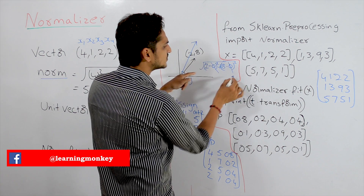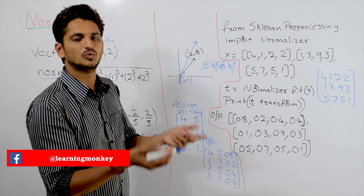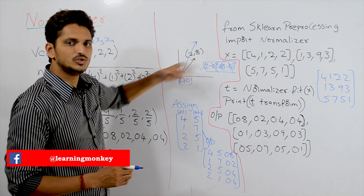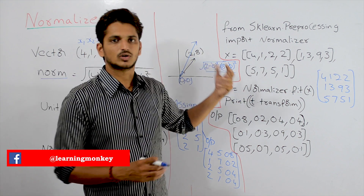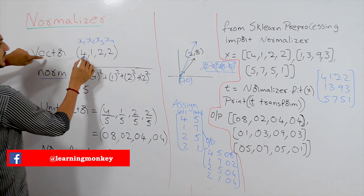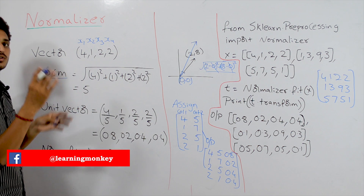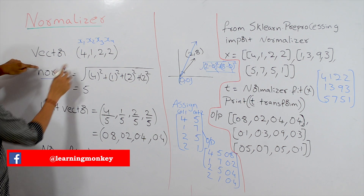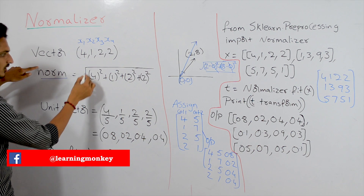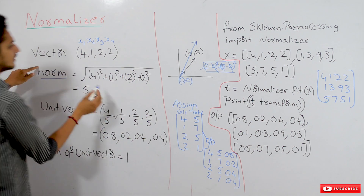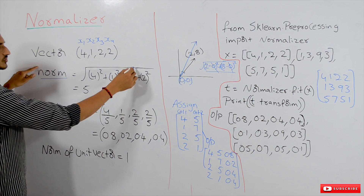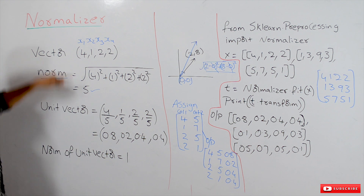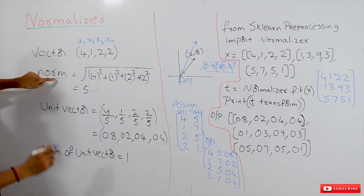You can simplify since 8 minus 0 is 8 and 2 minus 0 is 2 — just square each value and take the square root. This is how we calculate the norm of a vector, and this concept is used in normalization. Coming to our normalization, consider the vector (4, 1, 2, 2) in a 4-dimensional coordinate space. The norm is calculated as the square root of 4 squared plus 1 squared plus 2 squared plus 2 squared, which equals 5.